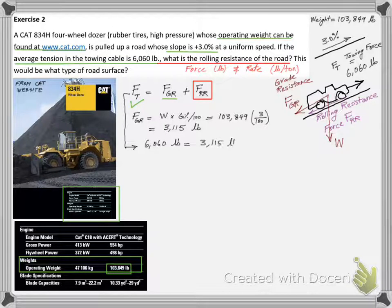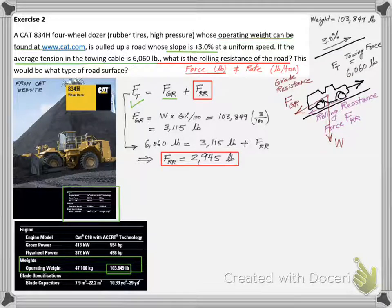We go back to the towing force equilibrium equation and we are finally able to calculate FRR to be 2,945 pounds.